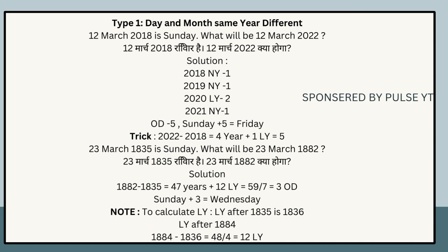Note: To calculate leap years — the first leap year after 1835 is 1836. Leap years from 1836 to 1884: (1884 − 1836) ÷ 4 + 1 = 48 ÷ 4 = 12 leap years.